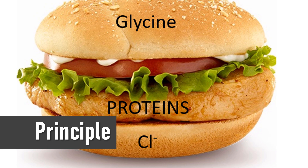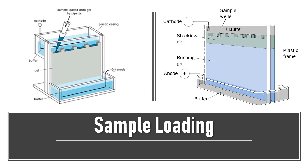This slide shows how exactly the samples are loaded onto the wells using a micropipette. After the loading is done, an electric field is applied, after which the samples start running and separating on the gel matrix.